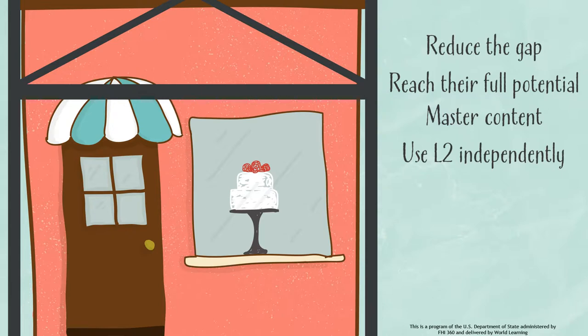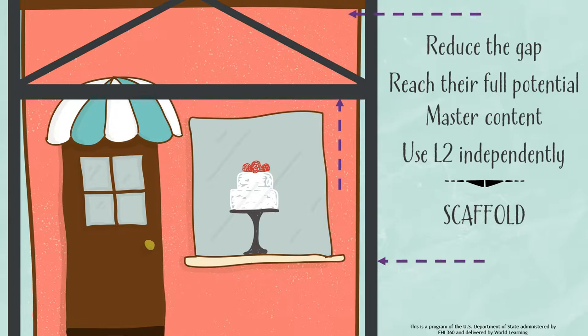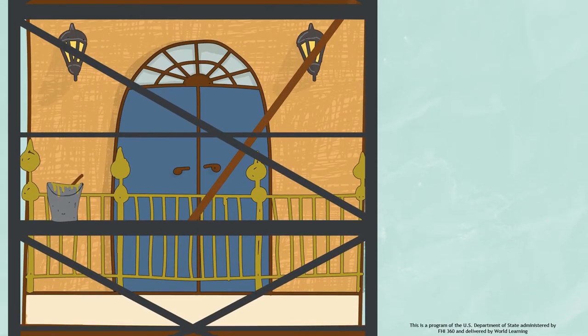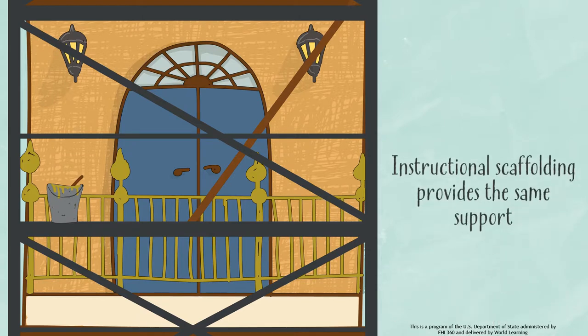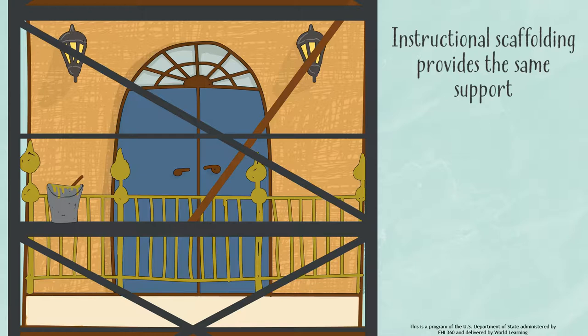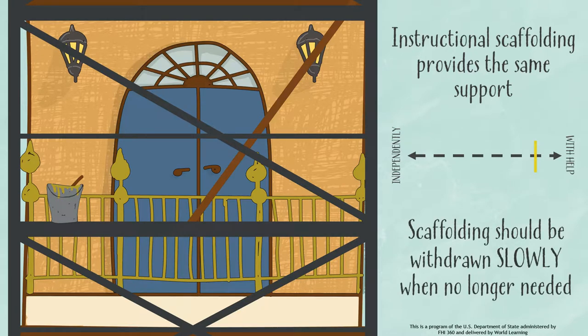In order to reduce this gap of capabilities and help students reach their full potential to master content and use their L2 independently, a CBI teacher needs to scaffold. In the world of construction, scaffolds are the temporary structures that provide physical support to workers and help them reach work areas they could not reach on their own. In a CBI classroom, instructional scaffolding provides the same support to classroom teaching, used as needed to bridge the learning gaps when students are unable to complete a task without support.